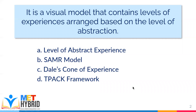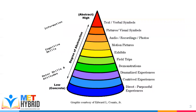For the first question: it is a visual model that contains levels of experiences arranged based on the level of abstraction. A, level of abstract experience; B, SAMR model; C, Dale's cone of experience; D, TPACK framework. The answer is letter C, Dale's cone of experience. As shown in the slide, Dale's cone of experience is a graphical representation which has 10 stages, proposed by Edgar Dale. Starting from the concrete experience at the bottom, it becomes more abstract as it reaches the peak of the cone.